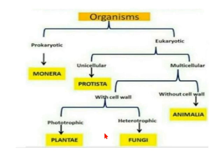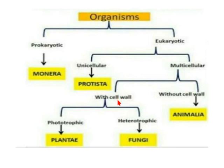Here is a flow chart as an easy way to remember: organisms are divided into prokaryotes and eukaryotes. Prokaryotes give us one kingdom — Monera. Eukaryotes are further divided into unicellular and multicellular. Unicellular eukaryotes belong to Kingdom Protista — remember Euglena, Chlamydomonas, and Amoeba. Multicellular organisms are further divided into those which have a cell wall and those which lack a cell wall.